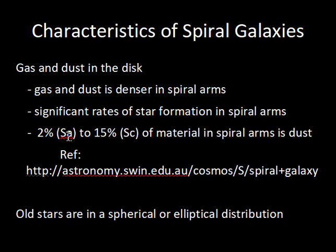There are different types of spiral galaxies: SA types have very small spiral arms, while SC types have very extended spiral arms. Up to 15% of the visible material in the spiral arms is dust. New stars are in the thin disk of the galaxy, while older stars are in a spherical or elliptical distribution around the center. The new stars are confined to the thin disk; the old stars are not.